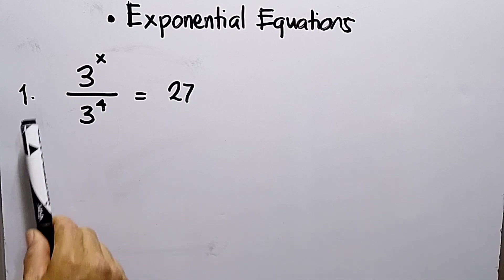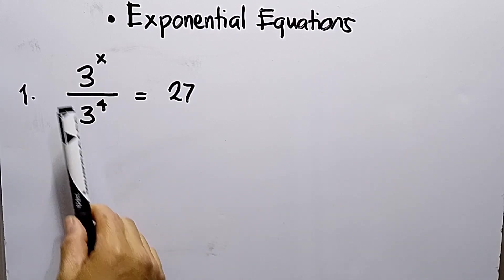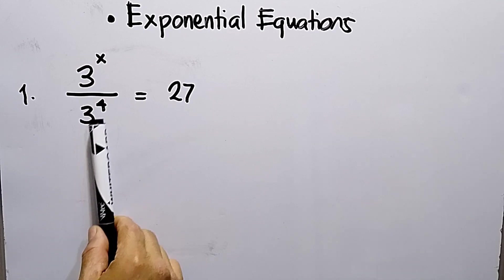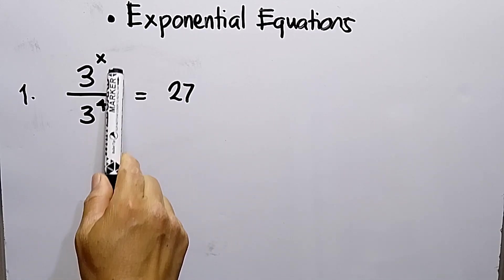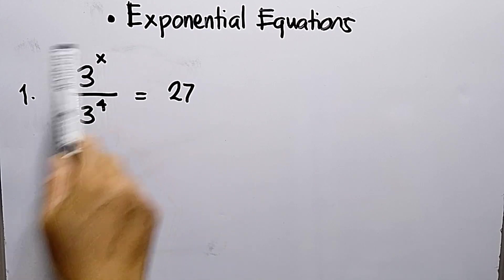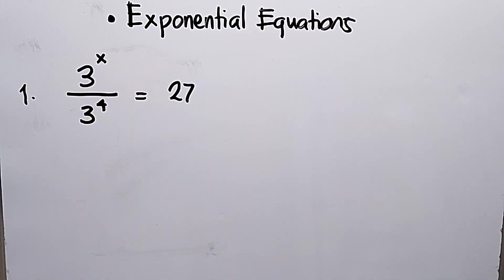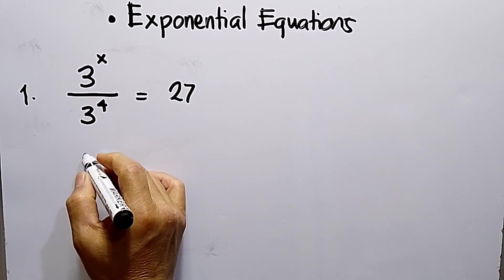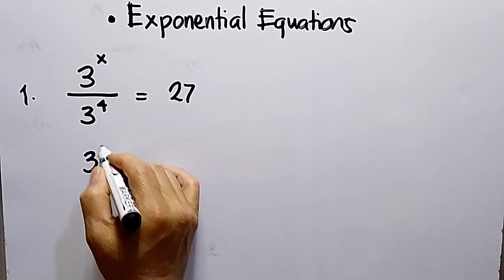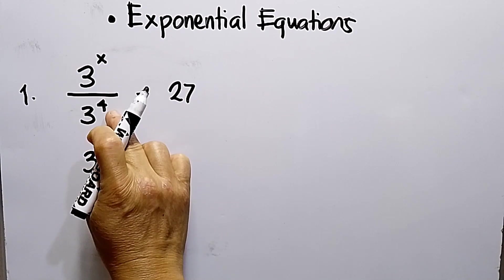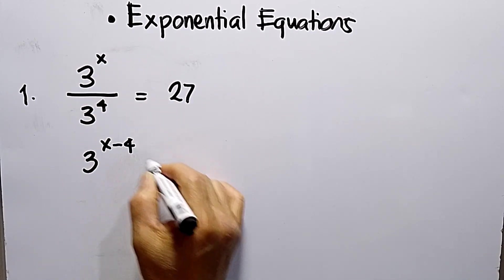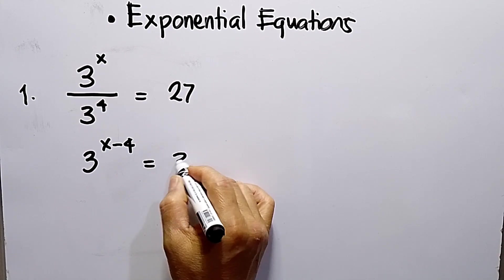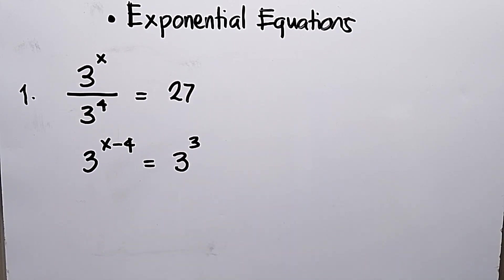I have here number 1: 3 raised to the x power divided by 3 to the 4th power equals 27. This exponential topic is taught in grade 7 and grade 8. I can write this as 3^x — the 4 will move up as minus 4. And the right side can be written as 3 raised to the 3rd power.